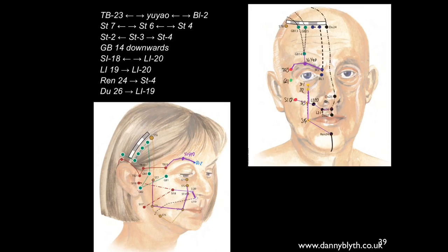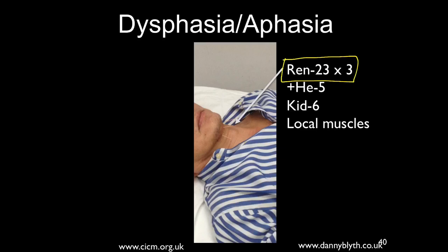This treatment is based on what you see and what you palpate. Ren 23 is a really important point for dysphasia or aphasia, often used with Heart 5 and Kidney 6 and some local treatment. Not only Ren 23 but two additional points either side of it have been used to help. You should only be doing this sort of treatment if your anatomy is good — only needle when you know what you're needling into.